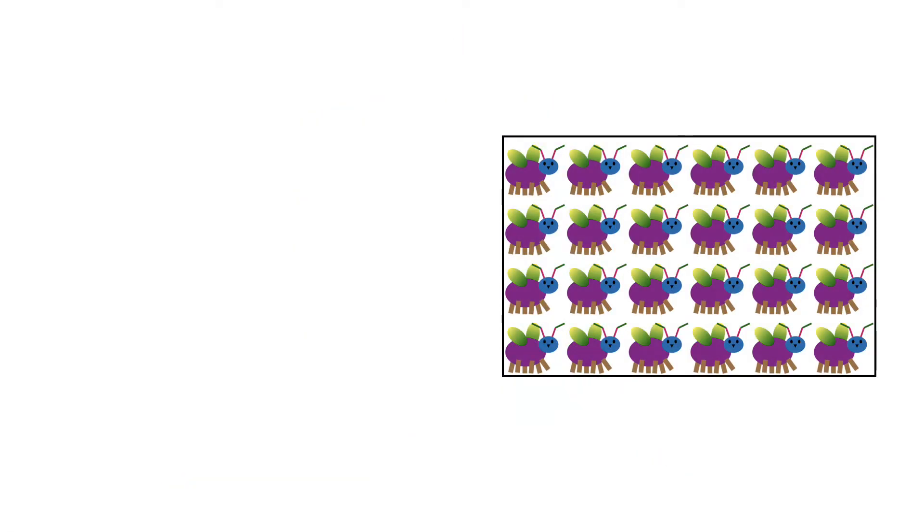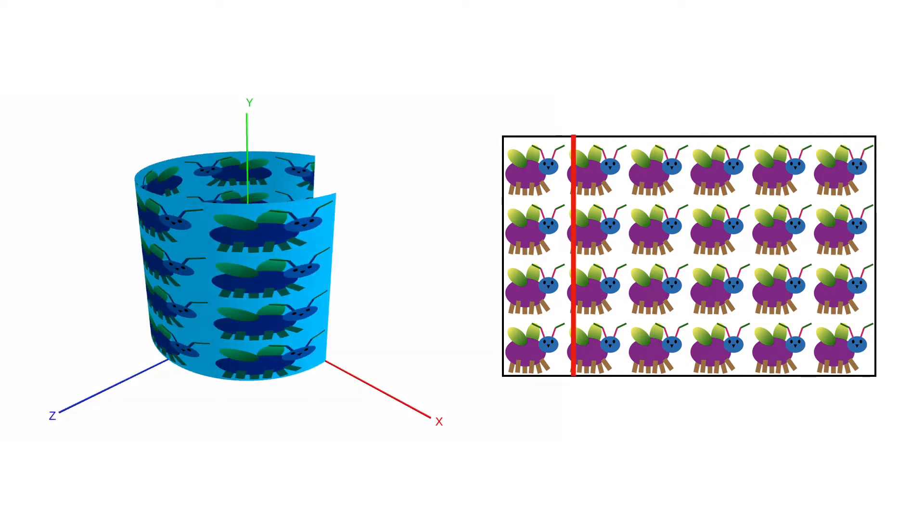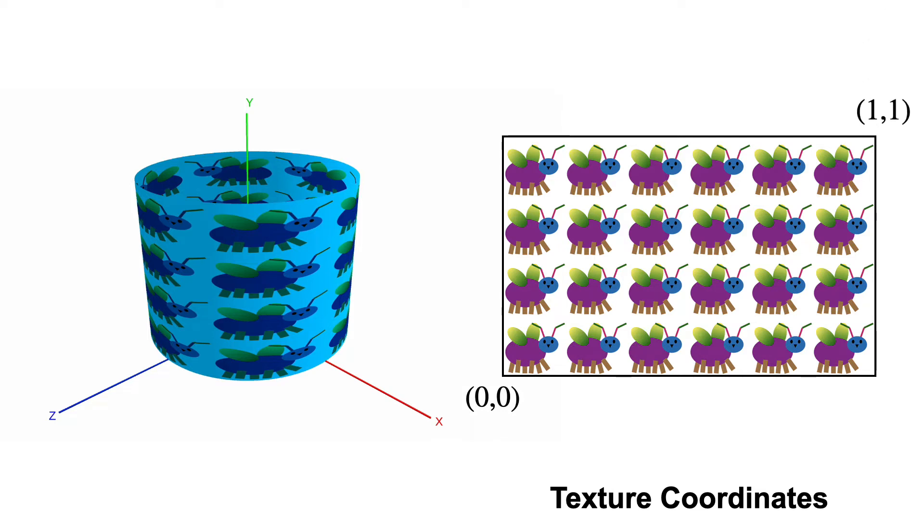Now suppose we'd like to wrap this texture around the cylinder like this. All we have to do is specify texture coordinates. We're going to assume the origin is at the bottom left, and the top right has coordinates 1, 1. U increases to the right, and V from bottom to top.